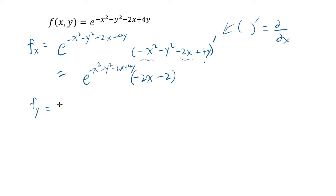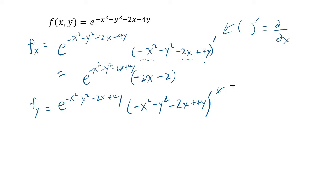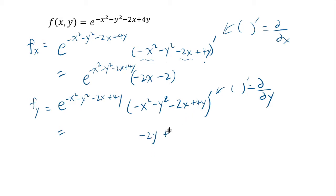What about f_y? Same story, but this time you're differentiating by y, treating x as a constant. So the x terms become 0, and you differentiate negative y² plus 4y: y² differentiates to 2y, so you get (−2y + 4) · e^(−x² − y² − 2x + 4y). Those are the x and y partial derivatives.